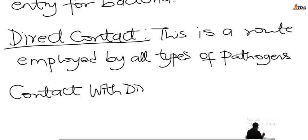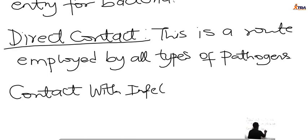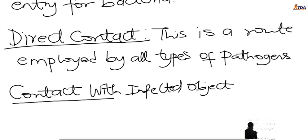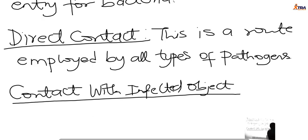Contact with infected objects is another means of entry for pathogens. In entomology, most insects are also parasites — some reside in dirty clothes, and once you wear those clothes, they find their way into your body. So clean your surroundings: wash your clothes, wash your plates after eating, and keep your environment clean.